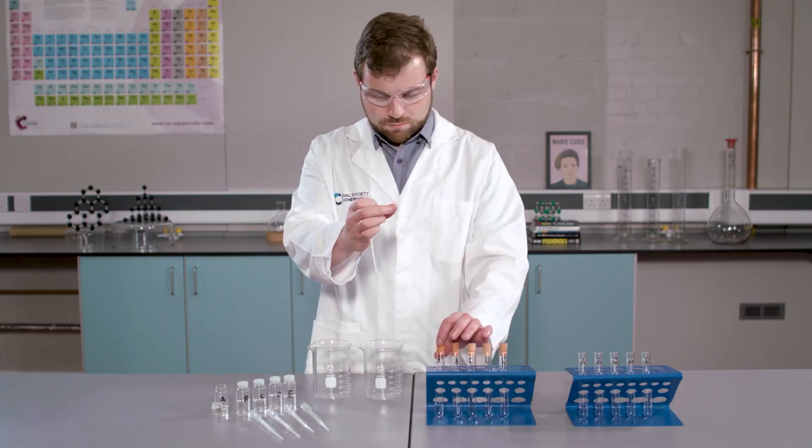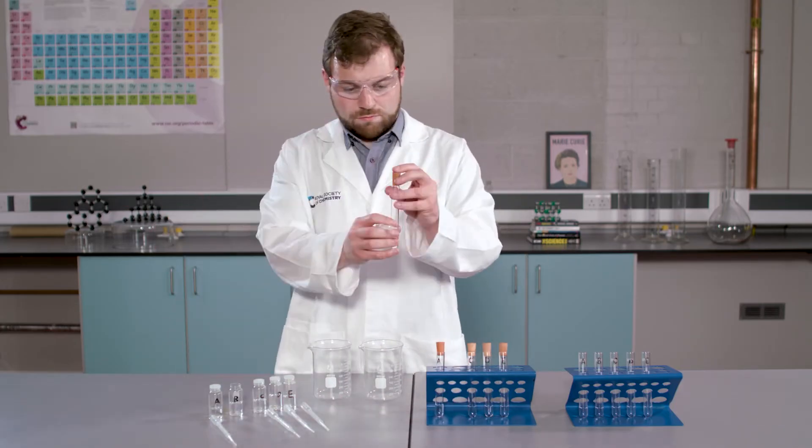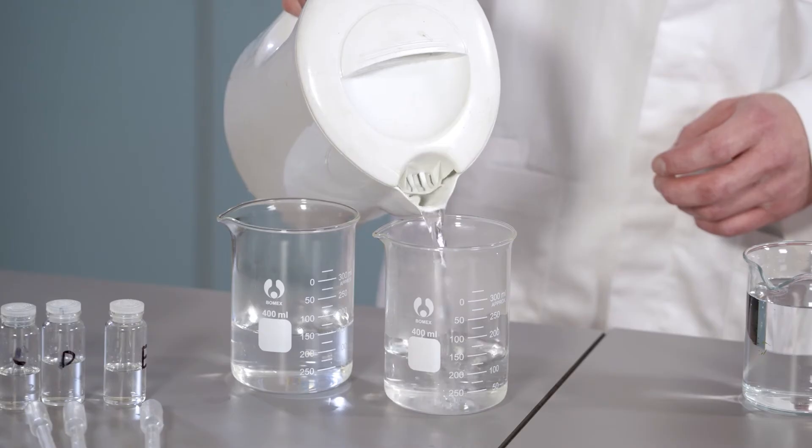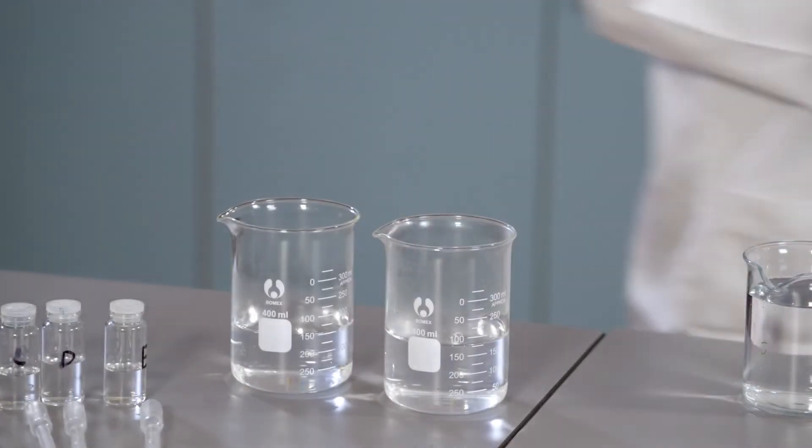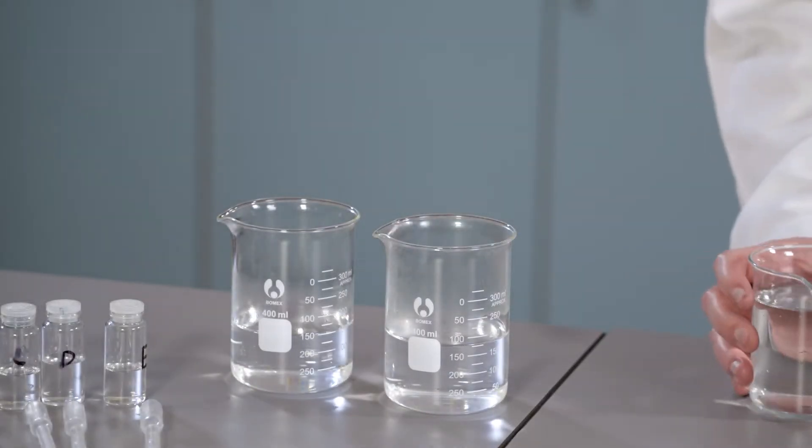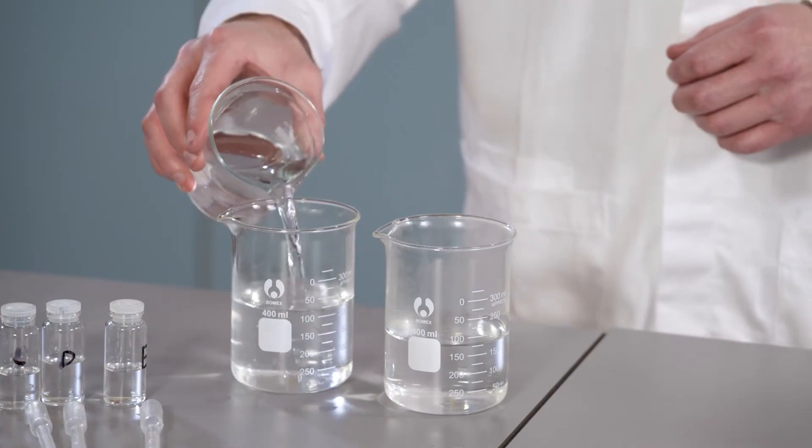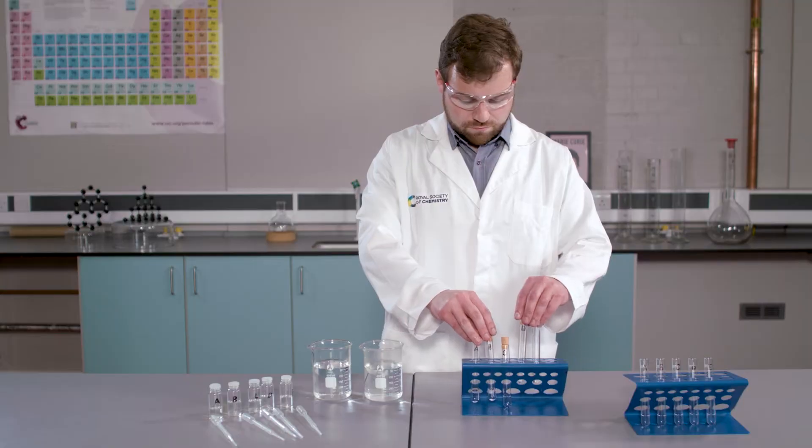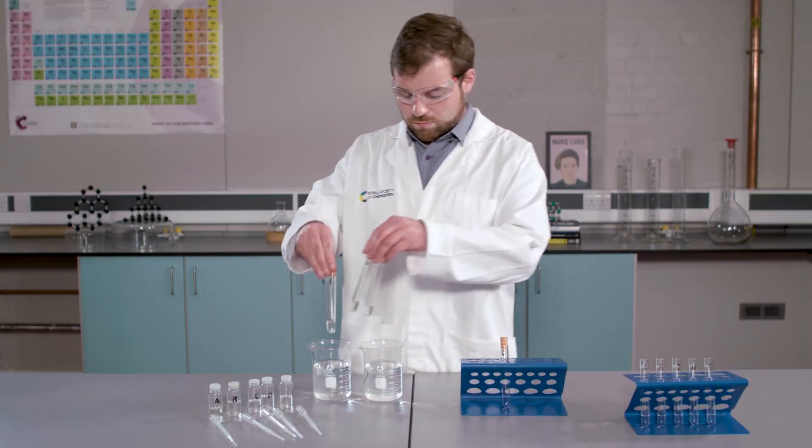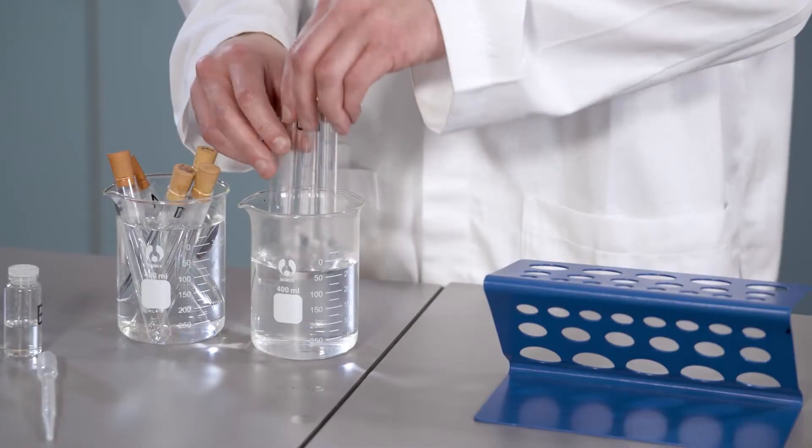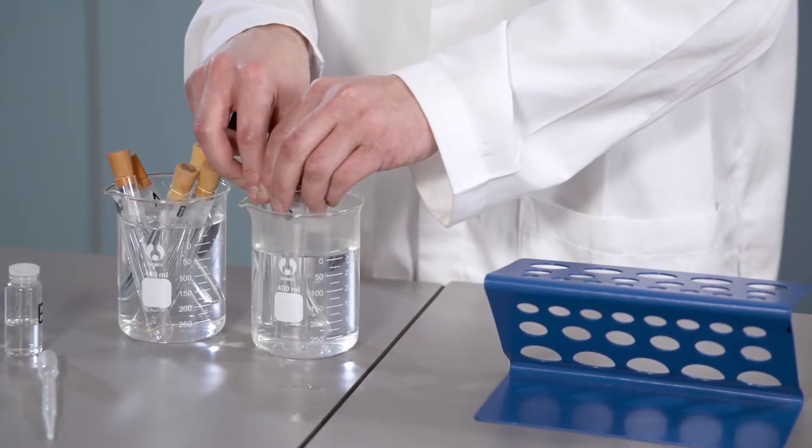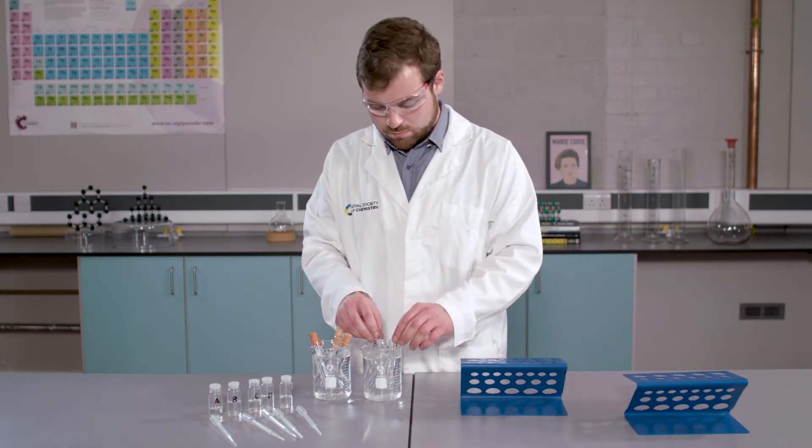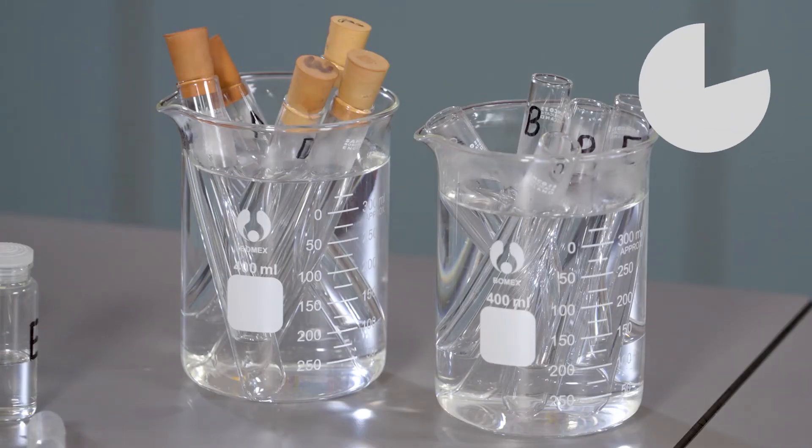In the first step, I am going to add ten drops of each of our samples to two centimetres cubed of ethanol. As always, I have labelled our test tubes. Next, I am going to make two water baths, with half of the water coming from a freshly boiled kettle and the other half from a cold tap. I am now going to place our test tubes containing samples A to E into one of the water baths. Into the other water bath, I am going to place five test tubes containing 2.5 centimetres cubed of silver nitrate solution. I am going to leave this for around five minutes.